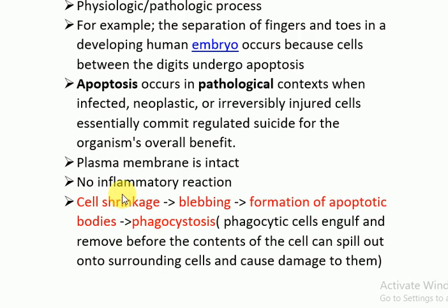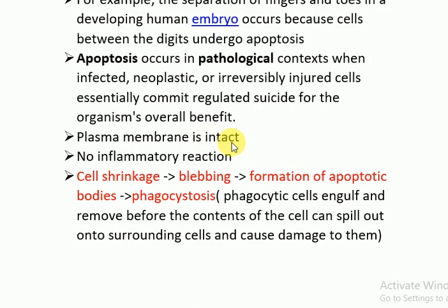To summarize the steps of apoptosis: cell shrinkage, then blebbing, formation of apoptotic bodies, and finally phagocytosis before contents spill out. These apoptotic bodies are not formed in necrosis. In necrosis, the plasma membrane does not remain intact, and there is an inflammatory reaction.